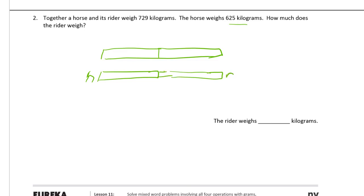I'll call that H and R. The horse is 625 kg and the whole thing together is 729 kg. And this is what we have to find, the weight of the rider. So we're going to subtract to find that out. 729 minus 625. And this is going to be a good one for vertical subtraction because we're not going to have to regroup any ones or tens.